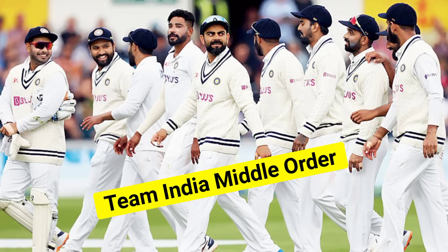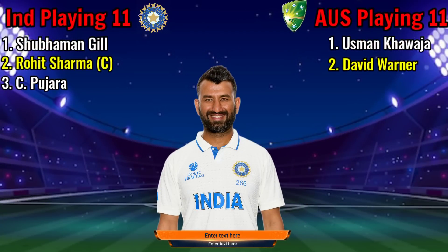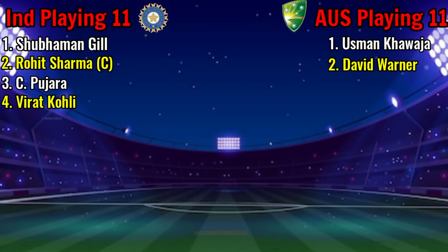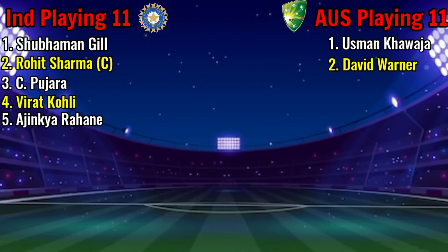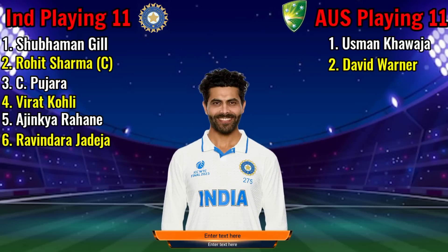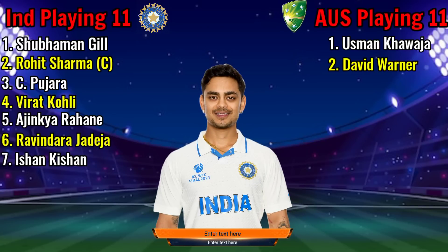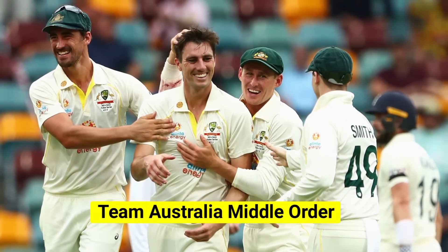Team India middle order: Number 3, Chiteswar Pujara, right-hand batsman; Number 4, Virat Kohli, right-hand batsman; Number 5, Ajinkya Rahane, right-hand batsman; Number 6, Ravinda Jadeja, left-arm all-rounder; Number 7, Jan Kishan, left-arm batsman.